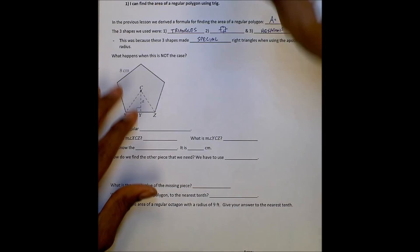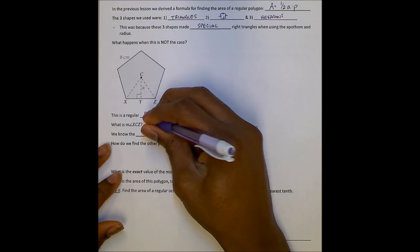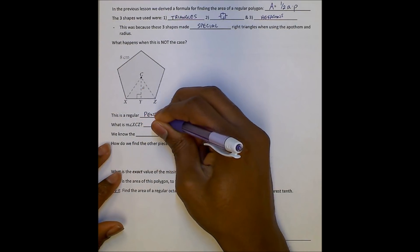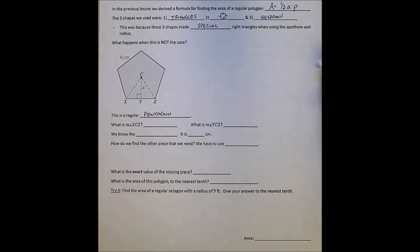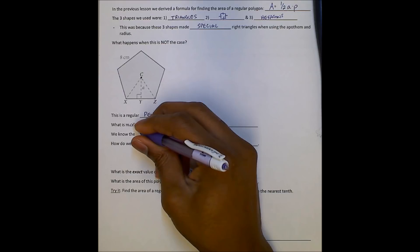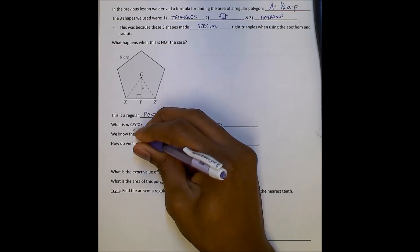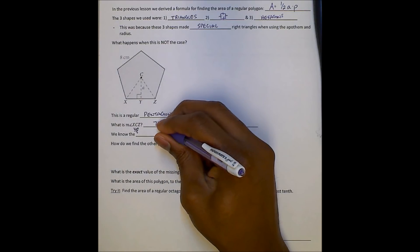This is a regular pentagon. Pentagon, five sides. The process pretty much stays the same as far as we're still looking for the central angle. And that is angle XCZ here, the central angle. We can find that, remember, by doing 360 divided by the number of sides.